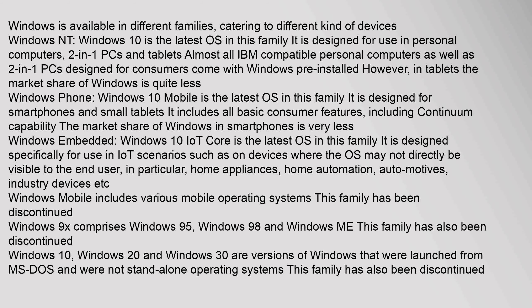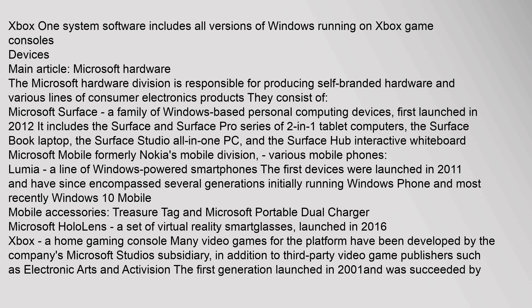Windows IoT Core is used on devices where the OS may not directly be visible to the end user — for example, home appliances, home automation, automotives, and industry devices. Windows Mobile has been discontinued. Windows 9X, comprising Windows 95, 98 and ME, has also been discontinued. Earlier versions such as Windows 1.0, 2.0 and 3.0 were launched from MS-DOS and were not standalone operating systems. Xbox One system software includes all versions of Windows running on Xbox game consoles.